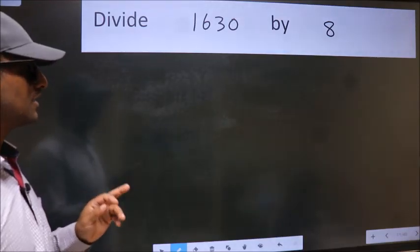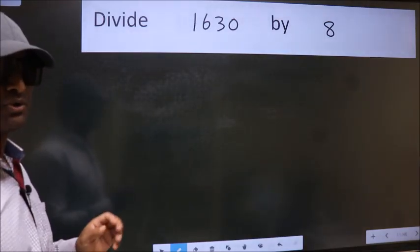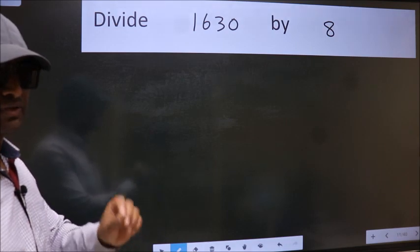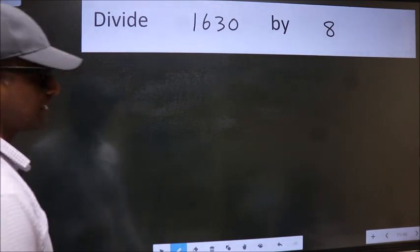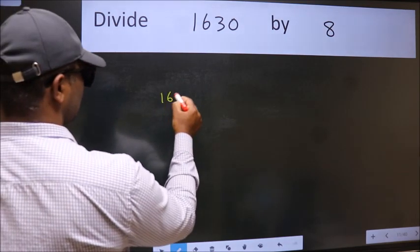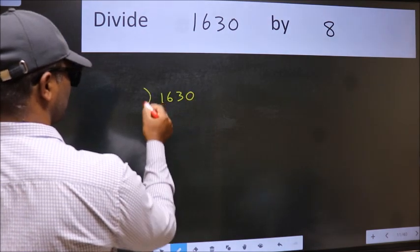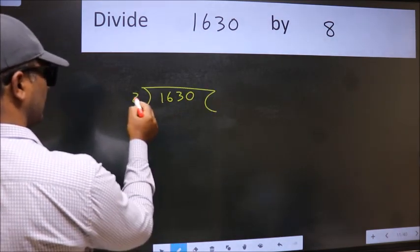Divide 1630 by 8. To do this division, we should frame it in this way. 1630 here, 8 here.